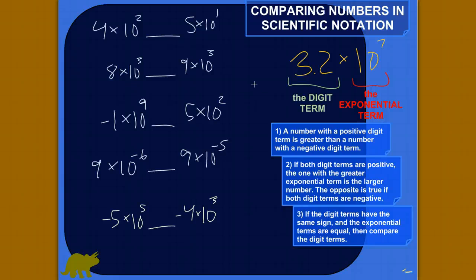I want to show you three rules for comparing numbers in scientific notation so that you can take two numbers in scientific notation and figure out which one is greater. If you're given a list of numbers in scientific notation, you can put them in the right order, from least to greatest or greatest to least. I'll tell you the rules in order, and then go through examples so this actually means something.